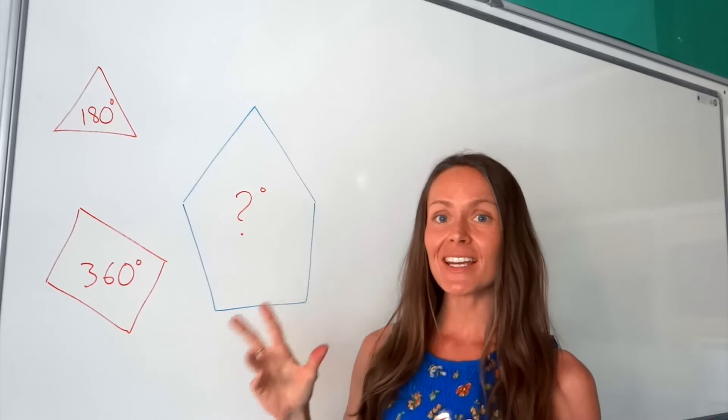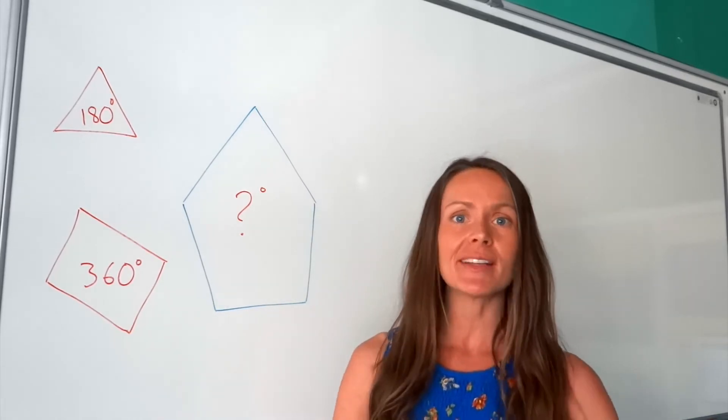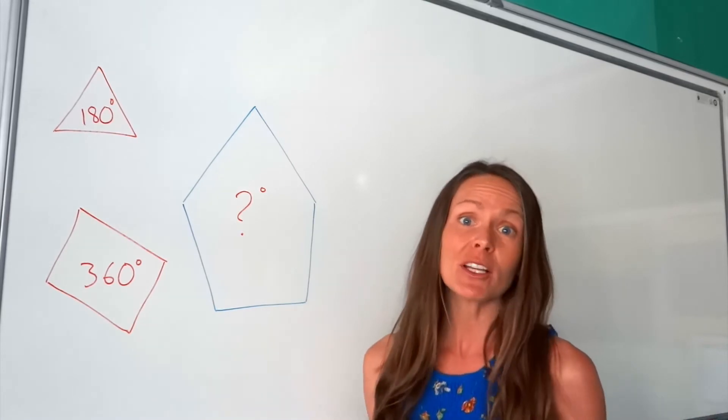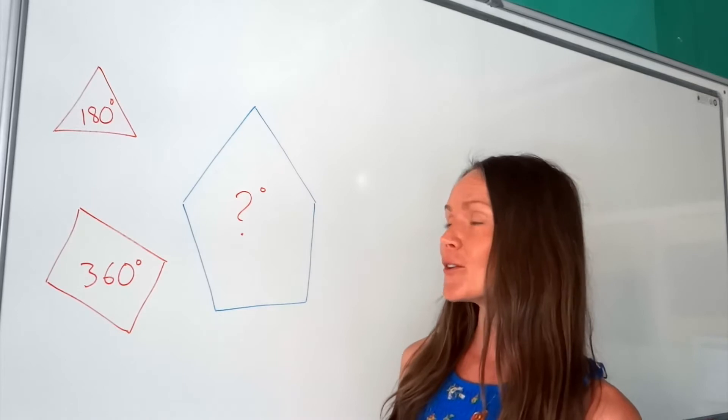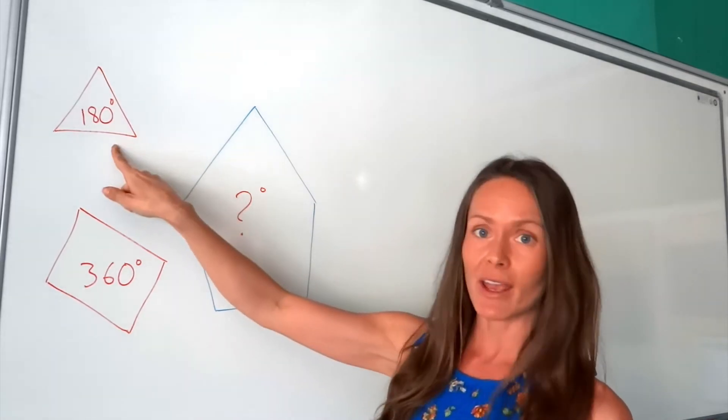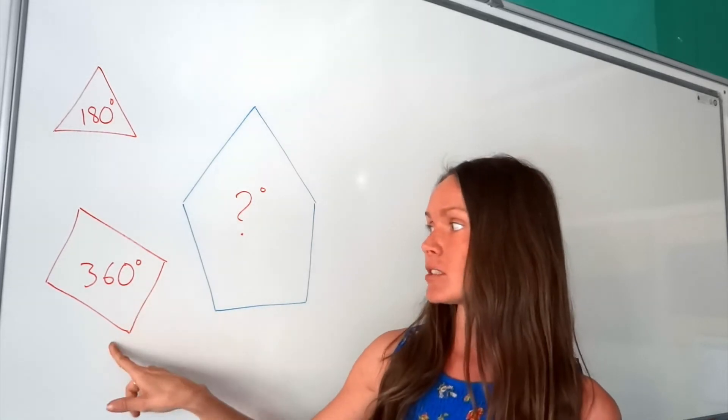Hi guys, I'm the MathsProf and today I'm going to show you how to work out the sum of interior angles in any polygon. Now, polygon is just another funny word for a shape. And you probably already know how many degrees there are in a triangle, 180, and in a quadrilateral, a four-sided shape, which is 360.